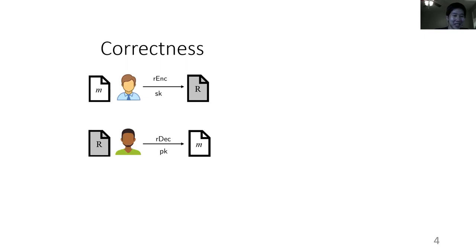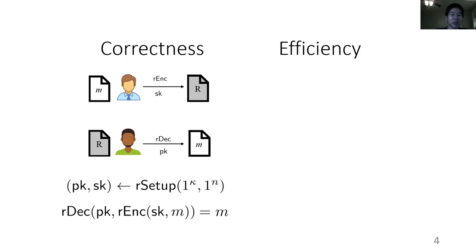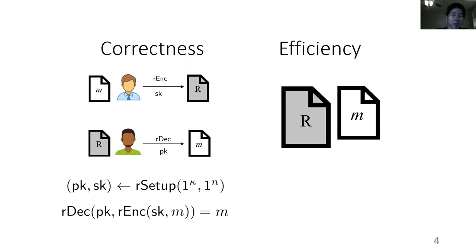Now there are a couple properties we want of such a replica encoding scheme. Perhaps most obviously, we would like it to be correct. So if you run a message through encode, and then run it through decode, hopefully you would end up with the same message again. We'd also like for there to be some efficiency properties, where the replica shouldn't be too much larger than the original message itself. In the case of the schemes that we look at, this ends up being only an O of security parameter additive factor larger than the original message.